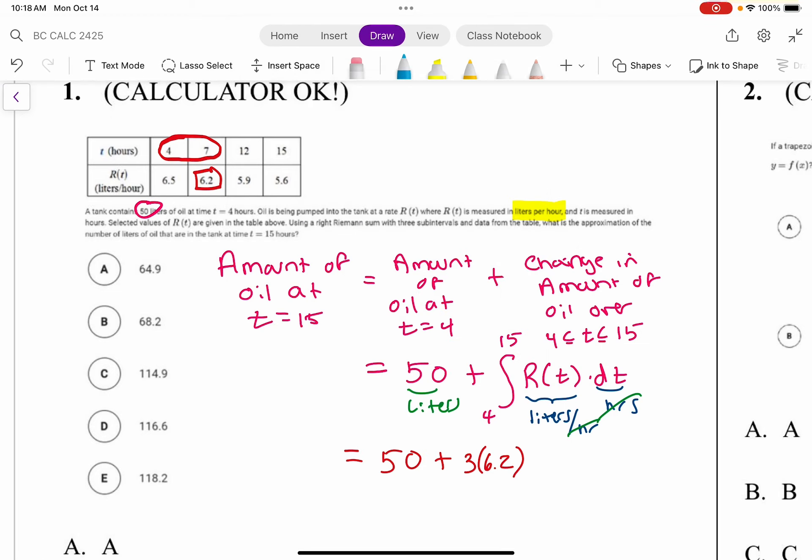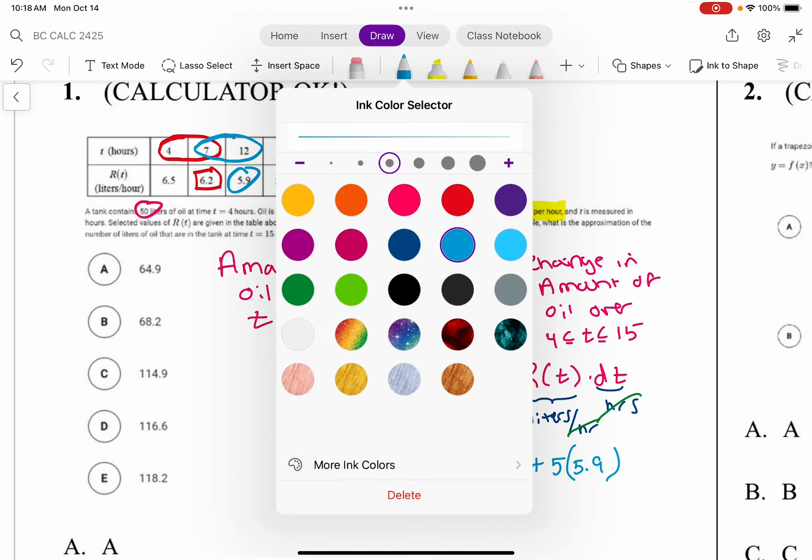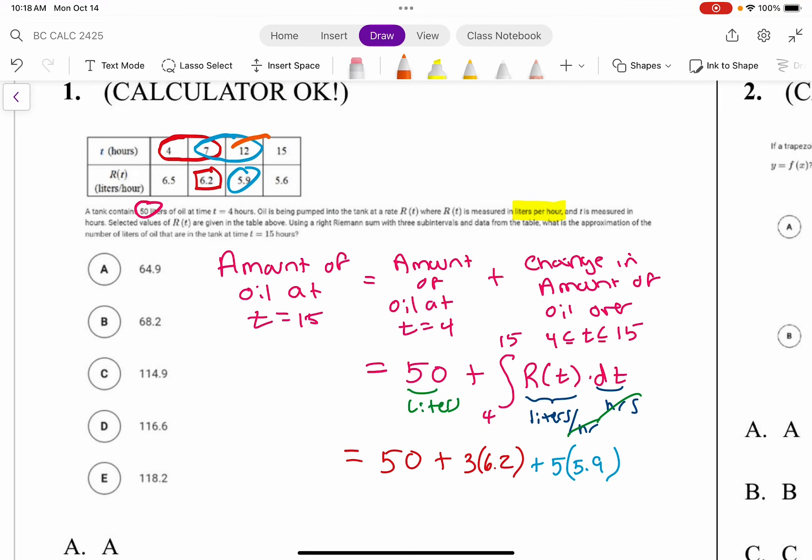Then the next rectangle would have a width of 5 and the height on the right hand side of that interval is 5.9.